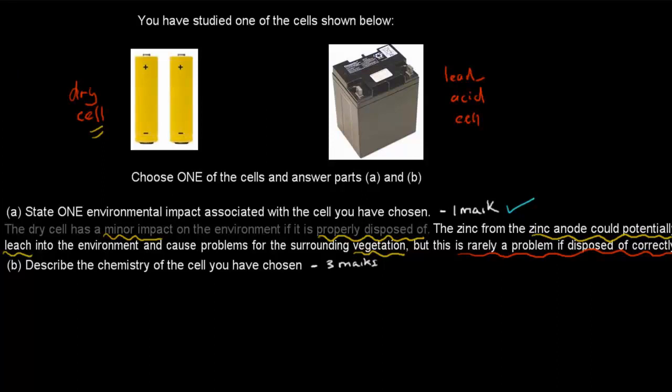The next part is describe the chemistry of the cell you've chosen. So remember for chemistry, there's a couple of parts. You should always mention the voltage. You should mention the anode, cathode, and electrolyte. And if you have time, it's really good choice to give equations as well. So the equations for your anode and the equations for your cathode. If you write all that, you get your three marks.